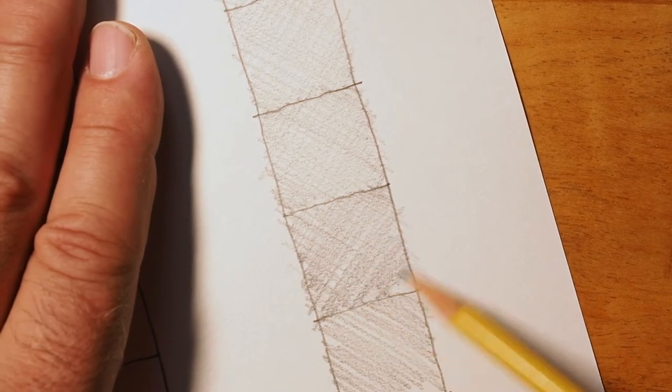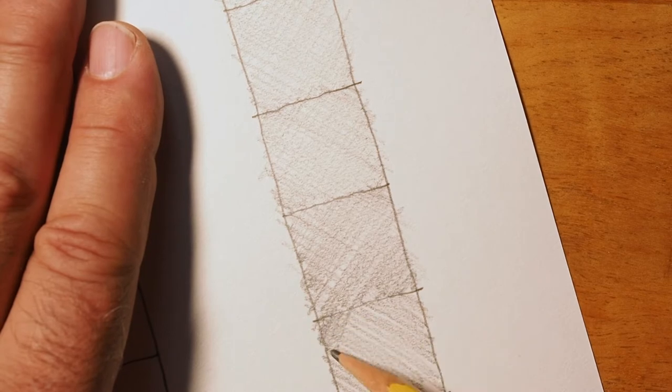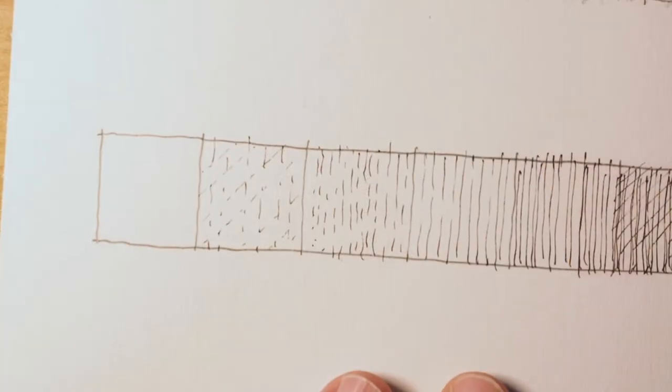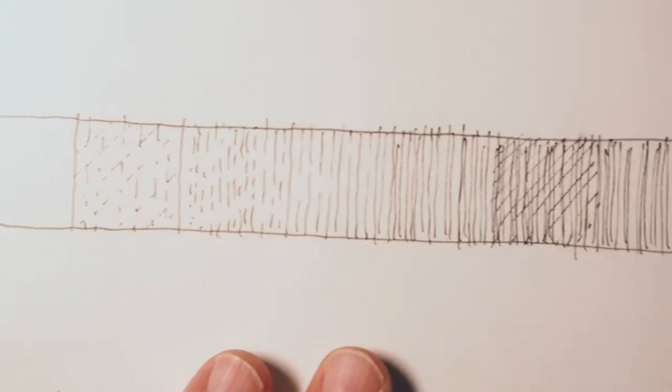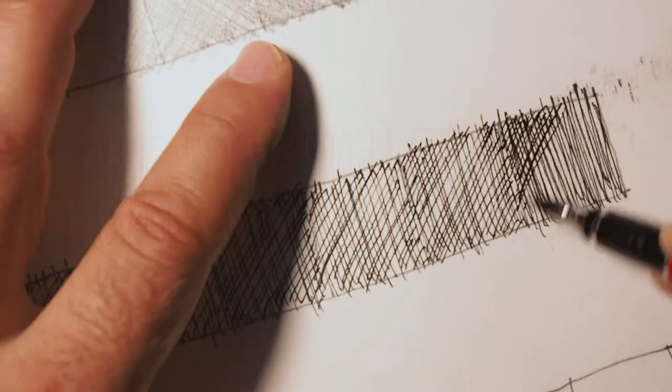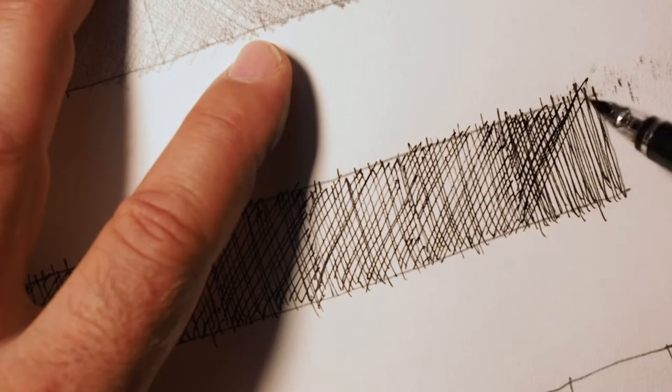The idea really is to make each box visually distinct from the one on either side. And you can use different tools to do this. Here's one that I started with a pen. This is actually a fountain pen.